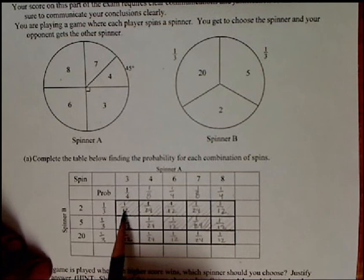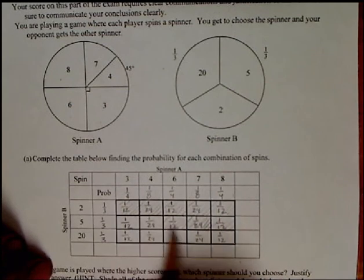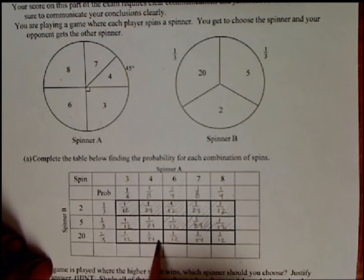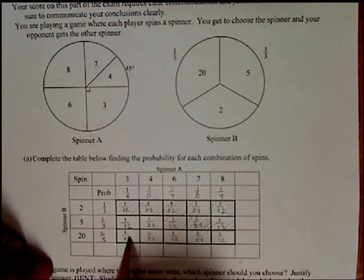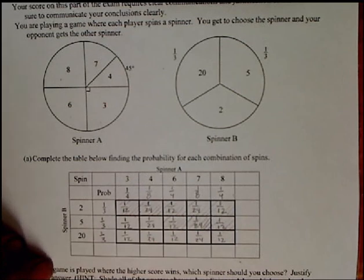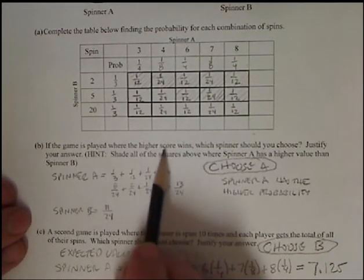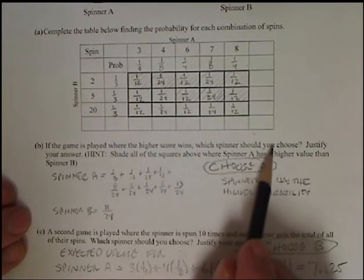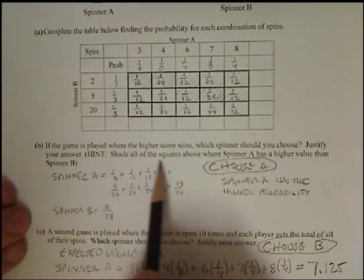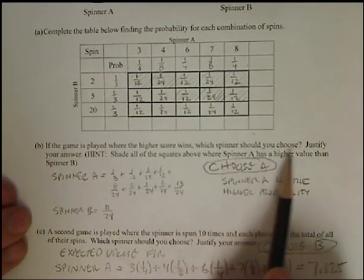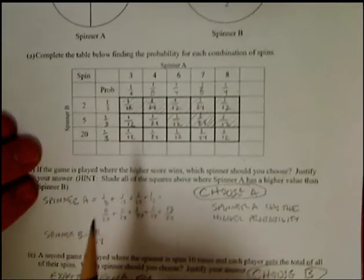These guys, if I go across this way, have to add up to 1 third. The columns have to add up to 1 eighth. So you've got 1 twelfth plus 1 twelfth plus 1 twelfth plus 3 twelfths. So that's 1 fourth. So you can act as a check, too. So, okay, first game. It says, if the game is played where the higher score wins, which spinner should you choose? Justify your answer. I'm going to give you a hint. Shade all the squares where spinner A has a higher value than spinner B. So this is what I did.